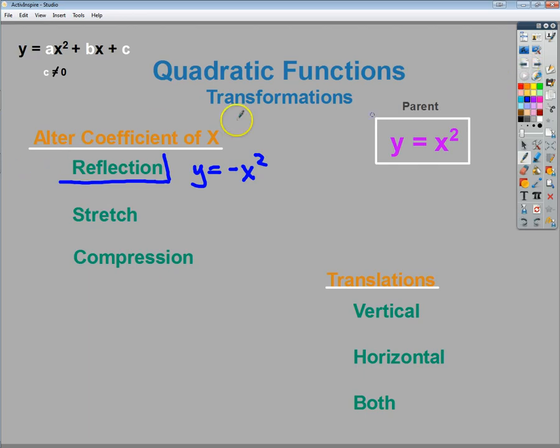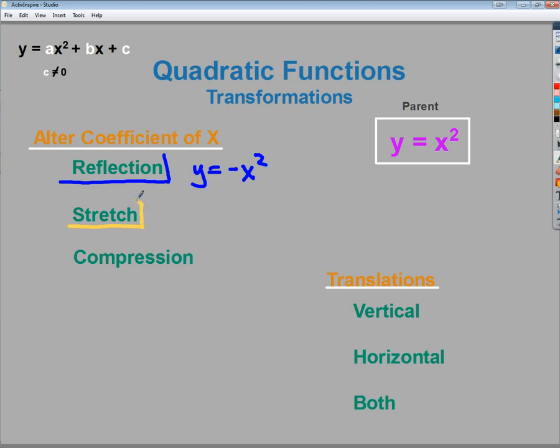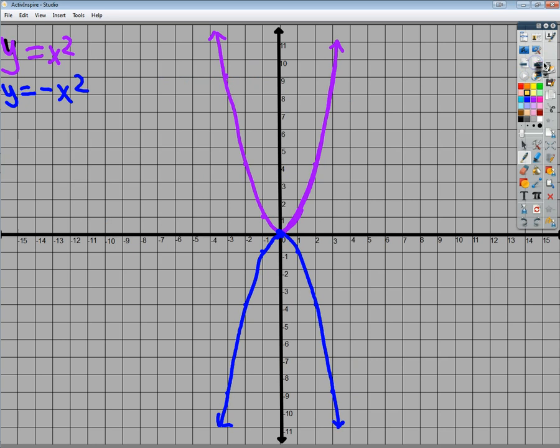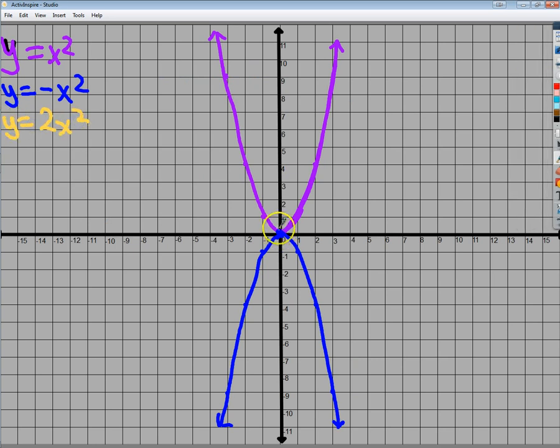Another type of alteration to that coefficient that we can make is to stretch the graph. By stretching, I mean I'm going to change the number in front of x with an A value that's actually greater than 1. So we're going to do y equals 2x squared. This should alter the look of the graph. The stretching thing becomes way more apparent once you actually start looking at it.